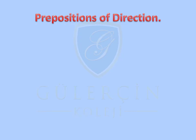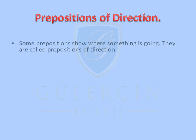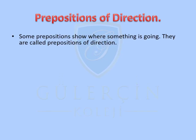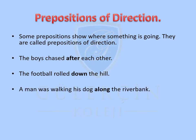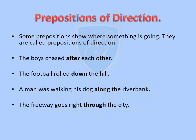Propositions of direction: Some propositions show where something is going. They are called propositions of direction. Examples: The boys chased after each other. The football rolled down the hill. A man was walking his dog along the riverbank. The freeway goes right through the steep. We were traveling towards Miami.